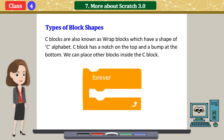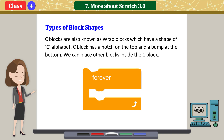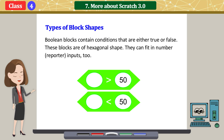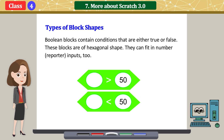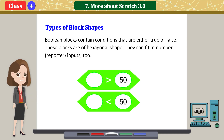C blocks are also known as wrap blocks, which have the shape of the letter C. A C block has a notch on the top and a bump at the bottom. We can place other blocks inside the C block. Boolean blocks contain conditions that are either true or false. These blocks are of hexagonal shape. They can fit in number inputs too.